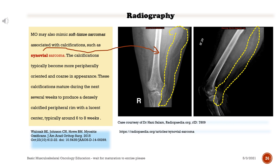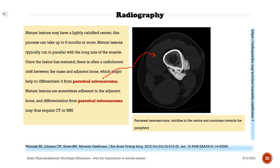The calcifications typically become more peripherally oriented and coarse in appearance. These calcifications mature during the next several weeks to produce a densely calcified periphery with a lucent center, typically around six to eight weeks. Mature lesions may have a lightly calcified center; this process can take up to six months or more. Mature lesions typically run in parallel with the long axis of the muscle. Once matured, there is often a radiolucent cleft between the mass and adjacent bone, which helps differentiate it from periosteal osteosarcoma.